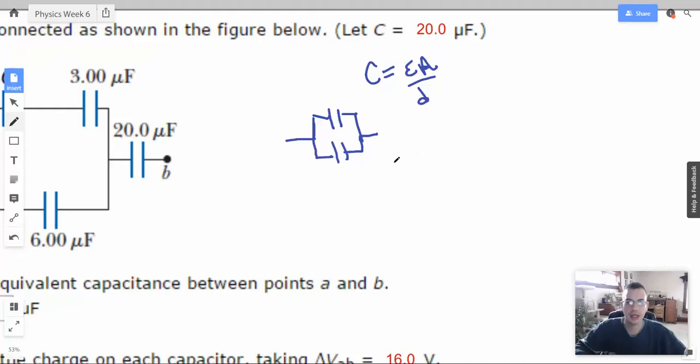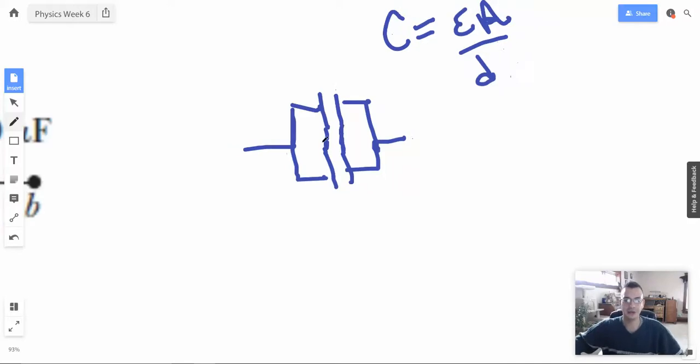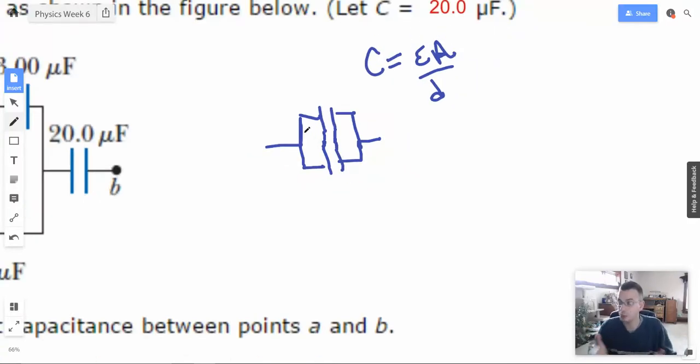The capacitance for a parallel plate capacitor is epsilon A over D. So you should know that. If you have more area, you have more capacitance. So here, let's say there's an infinitely small separation between the two. If you find the equivalent capacitance, you just add them. What you did is you just increased the area. You just added the areas together, and now you're just going to have a bigger capacitor. That's why it makes sense that capacitors in parallel would add together.